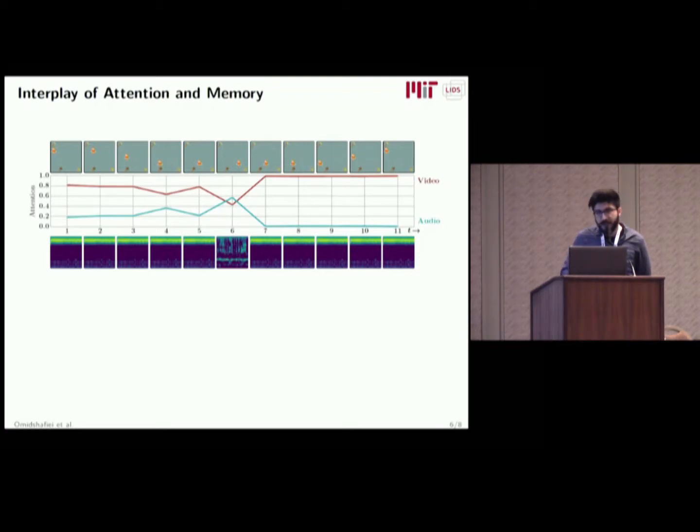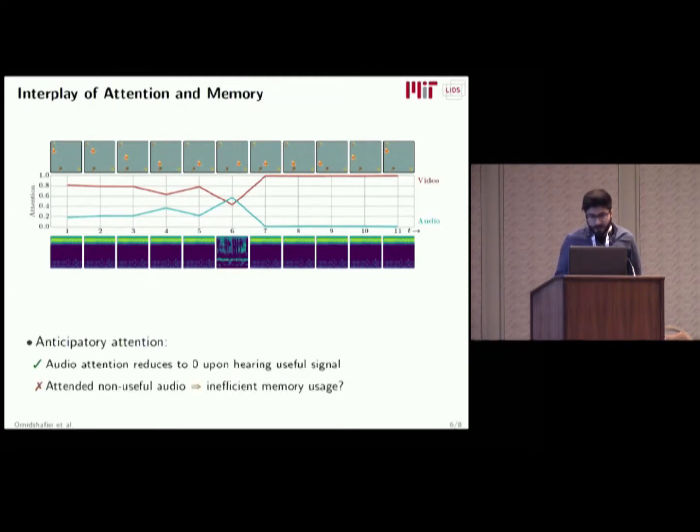What we're visualizing here is the agent's attention in a single episode, with video frames shown on top, audio spectrogram shown on the bottom, and audio and video attention shown in the center. Interestingly, the audio attention is low and gets higher as the agent gets closer to the ore. Once it gets that useful audio information at time step 6, it sets the audio attention to zero, which is great because it knows it's extracted all the useful audio information it needs. On the other hand, this is a little disconcerting, because why does the agent pay any attention to audio before time step 6? Does this mean it's storing more information into its LSTM memory and making inefficient usage of its finite size memory?